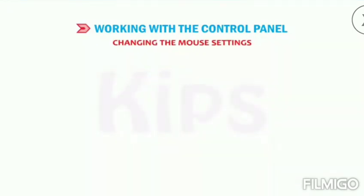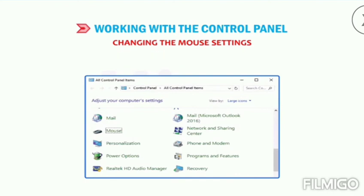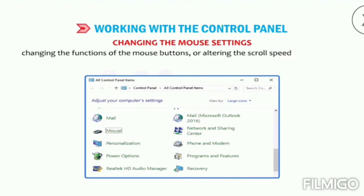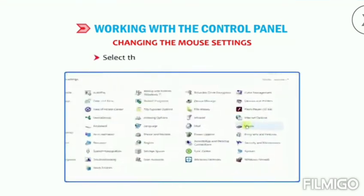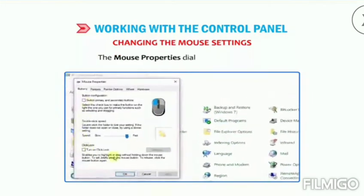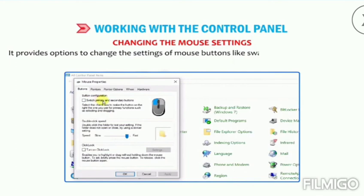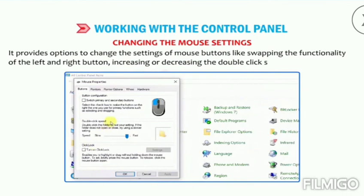Changing the mouse settings — you can customize the mouse settings in various ways such as changing the appearance of the mouse pointer, changing the functions of the mouse buttons, or altering the scroll speed of the mouse wheel. Select the Mouse option in the Control Panel. The Mouse Properties dialog box will appear — the Buttons tab is selected by default. It provides options to change the settings of mouse buttons like swapping the functionality of the left and right button, increasing or decreasing the double-click speed, etc.